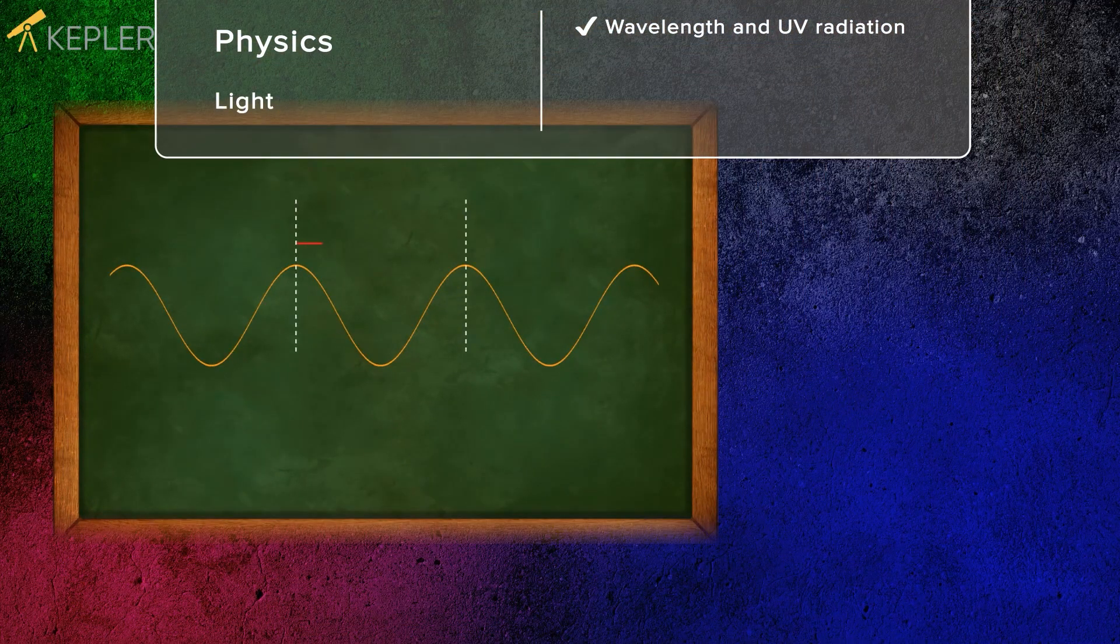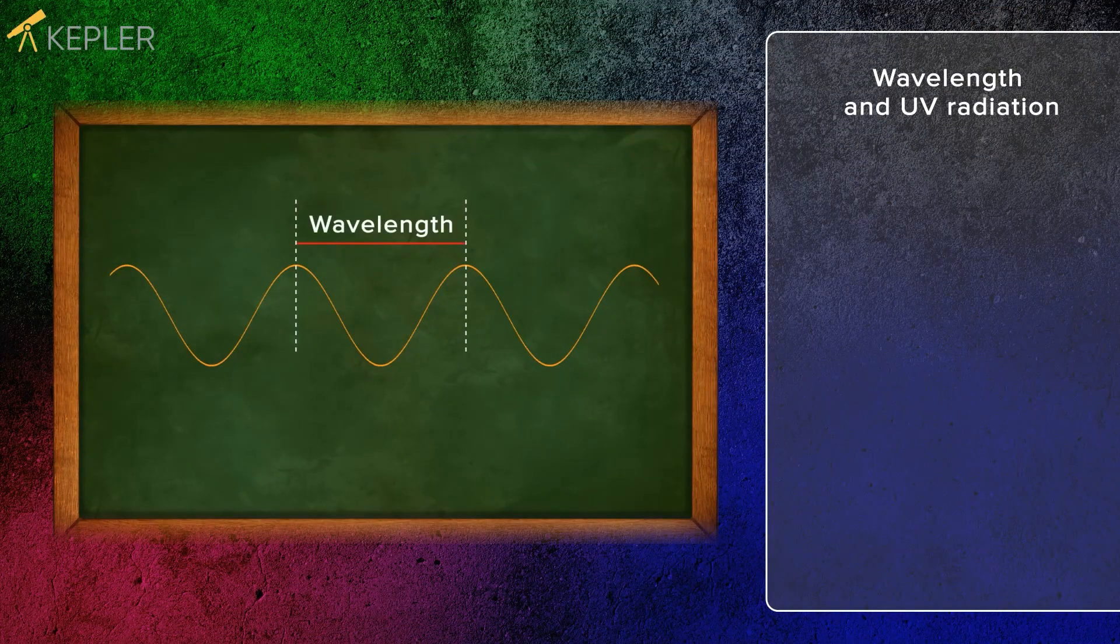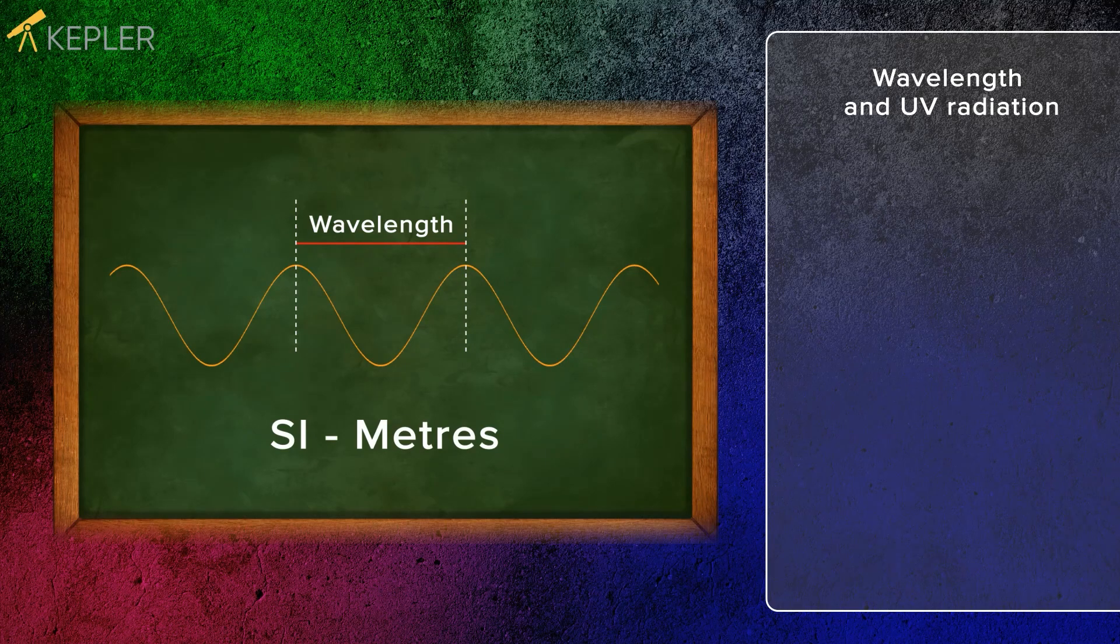The wavelength is the distance from one peak to another peak. The SI unit of wavelength is meters.